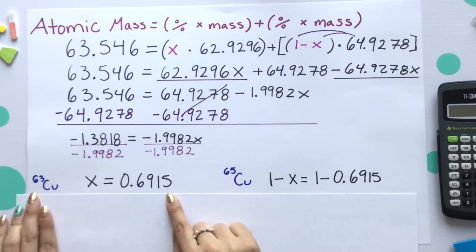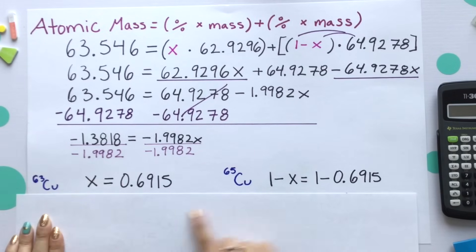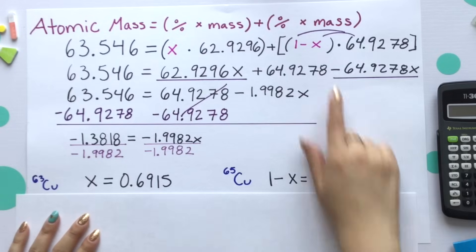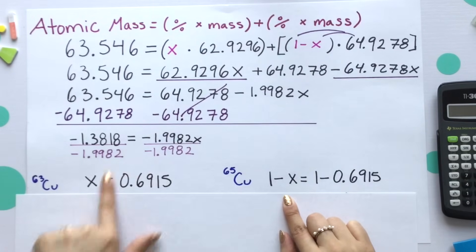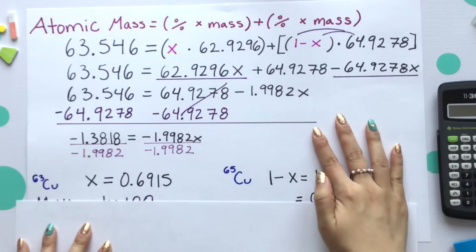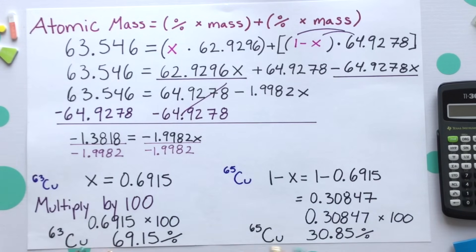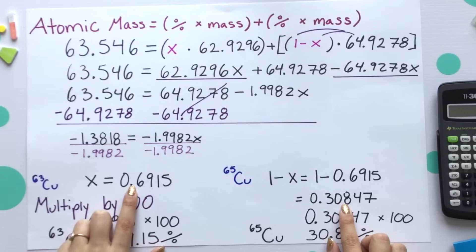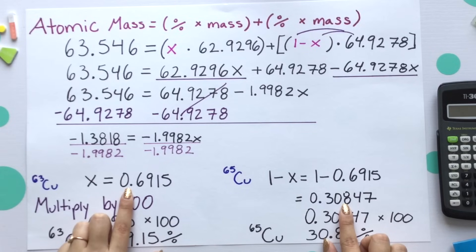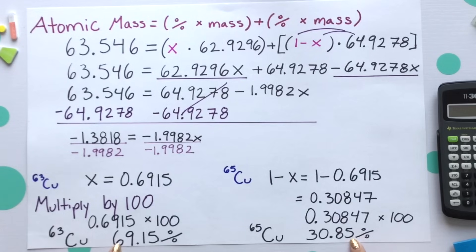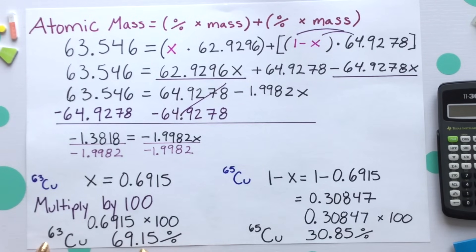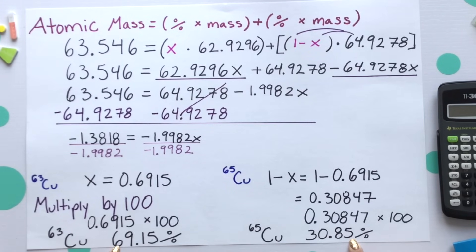That was just for our first isotope, which was copper-63. For our second isotope, we take 1 minus X — we subtract this X value from 1 — and that gives us 0.30847. The next step is to multiply both of these decimals by 100 to convert them to percentages. We see that our first isotope, copper-63, has a percentage of 69.15%. Our second isotope, copper-65, has a percentage of 30.85%. These are our percent compositions of our isotopes.